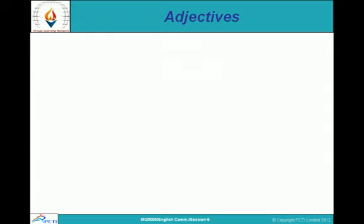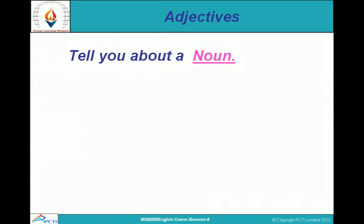Let us first understand what are adjectives. Adjectives kya hota hai? Hindi mein hum ise vishishan bolte hain. Adjectives tell you about a noun and a quality of a noun. Kisi bhi person ki, cheez ki, place ki ya kisi bhi object ki quality batane wale words ko adjective kaha jaata hai.